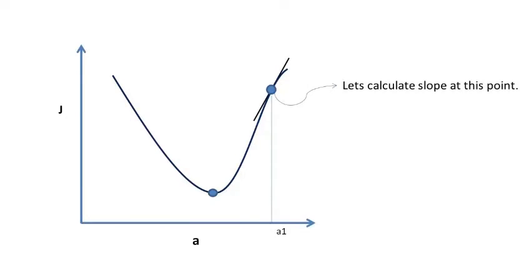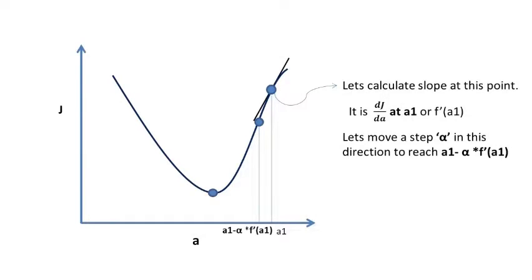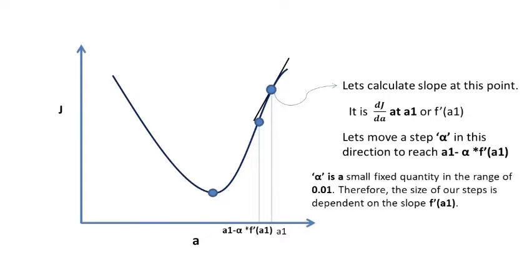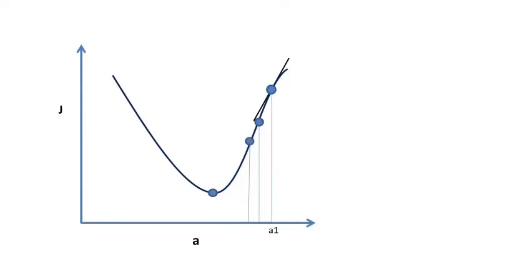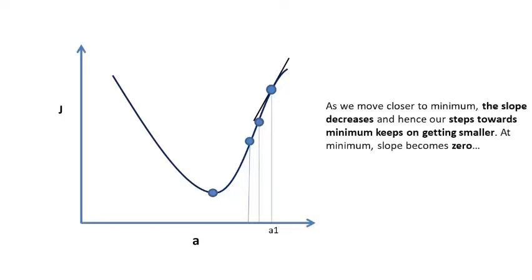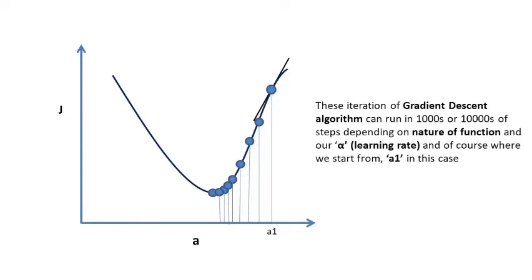Let's calculate slope at this point a1, f of a1. It is dj by da at a1, or f dash a1. Don't worry if you don't understand dj by da, you can interpret it as a slope at that point. Let's move a step alpha in that direction to reach a1 minus alpha times f dash a1. Alpha is a small fixed quantity in the range of 0.01, therefore the size of our steps is dependent on the slope f dash a1. Higher the value of slope, which occurs away from minima, larger the steps, and vice versa. As we move closer to the minima, the slope decreases and hence our step toward minimum keeps on getting smaller. At minimum, slope becomes zero. These iterations of gradient descent algorithm can run in thousands or tens of thousands, depending on nature of function, our learning rate, and of course where we start from.